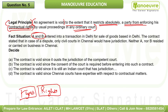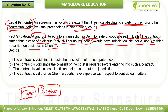Factual situation: A and B entered into a transaction in Delhi for the sale of goods based in Delhi. The contract particularly stated that in case of any dispute, they would go to the civil court in Chennai. Neither A nor B resided in or carried on business in Chennai. The key concept here is jurisdiction — a court's authority is limited to its geographic area, like the Delhi court having jurisdiction over matters arising in Delhi.